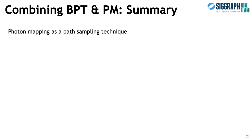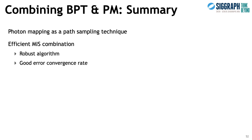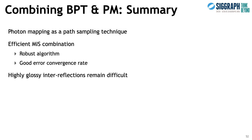To summarize, formulating photon mapping as a path sampling technique enables its efficient combination with bidirectional path tracing, and this combination handles complex lighting more robustly than its ingredients on their own. As an added benefit, the combined algorithm also inherits the higher error convergence rate of bidirectional path tracing. However, an MIS combination can be at most as good as the best available technique, and none of the techniques here is particularly efficient in sampling inter-reflections between highly glossy surfaces — handling these remains an open problem.